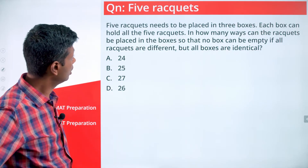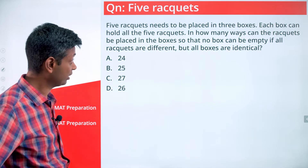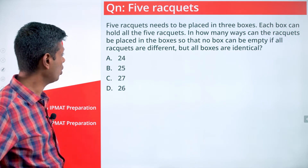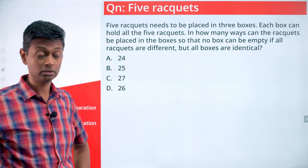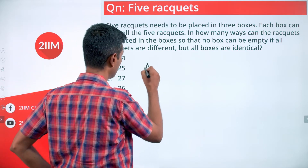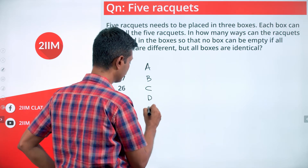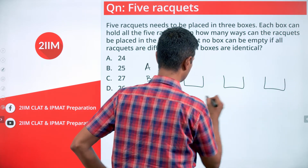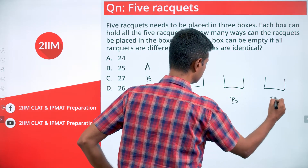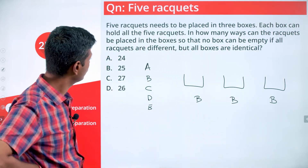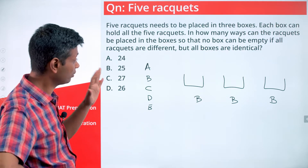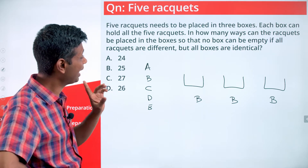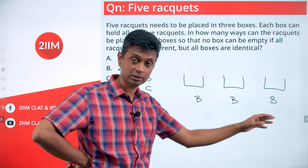Five rackets need to be placed in three boxes. Each box can hold all five rackets. In how many ways can the rackets be placed in the boxes so that no box can be empty? The rackets are different — call them a, b, c, d, e — but all boxes are identical. Any box can hold all five, but no box can be empty.